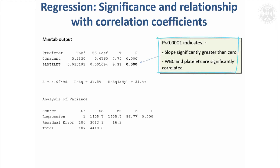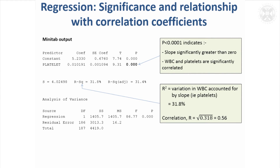That result is saying that yes, we have got a significant slope — we're sure that slope is positive. If we did this study again, we'd get a positive slope, maybe not exactly that value, but a positive slope again. This is quite a useful result: it's proved that white blood cell count is correlated with platelets in this study.